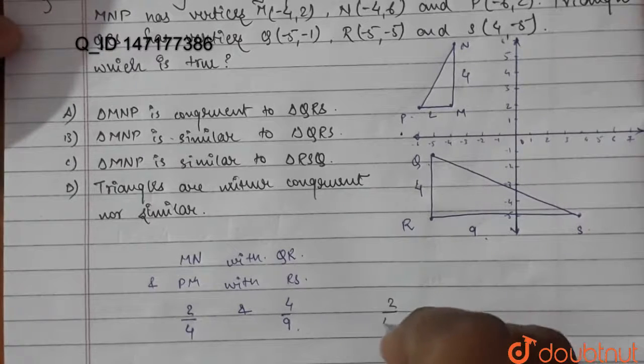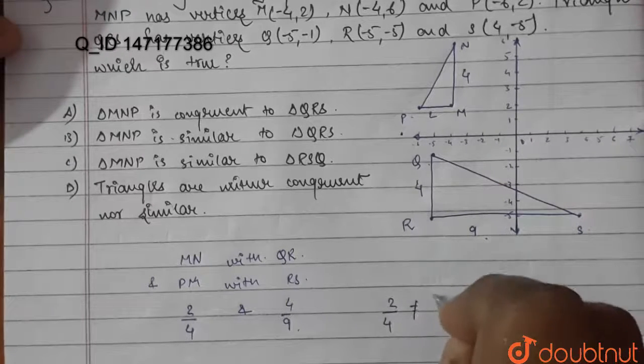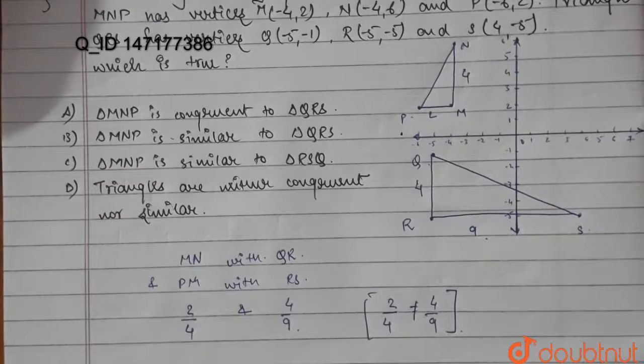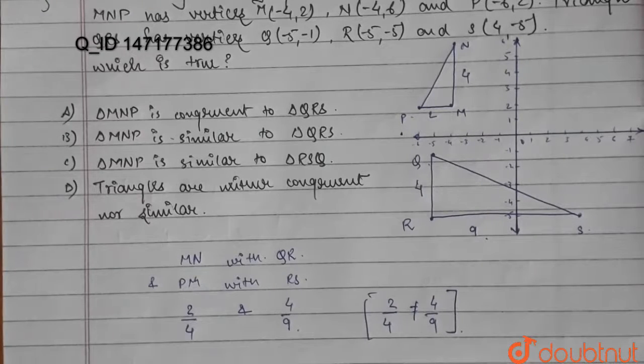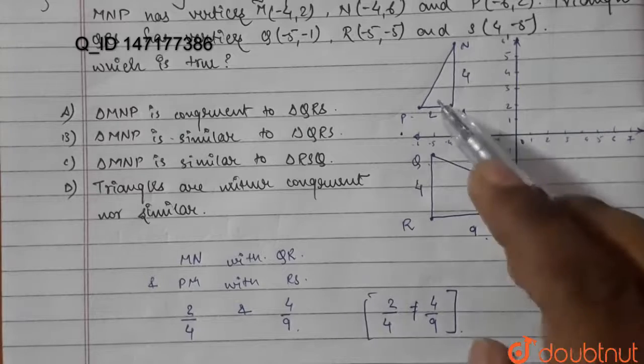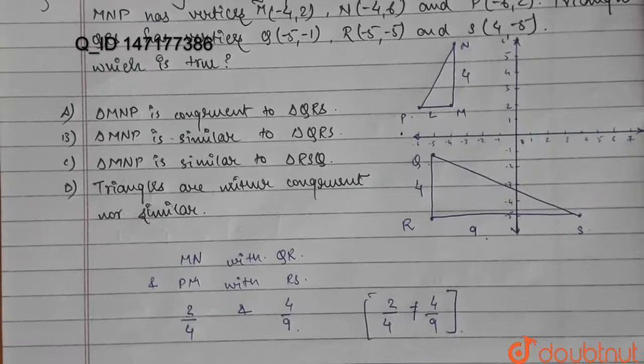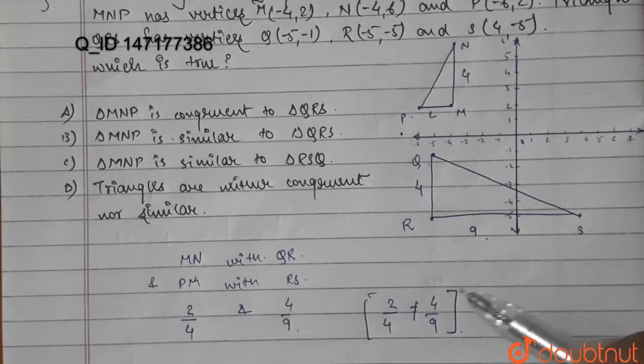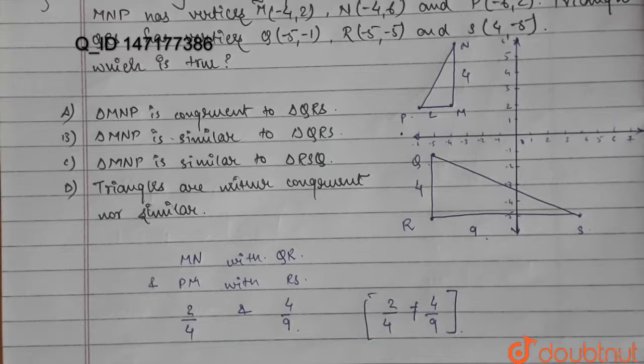We can write 2 is to 4 is not equal to 4 is to 9. From here, we get that these two right-angled triangles are not in the same ratio. This clearly rules out the property of similarity as the ratios are not equal.